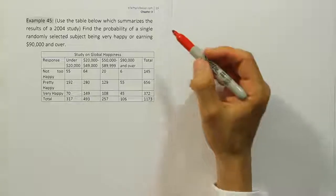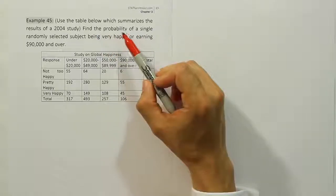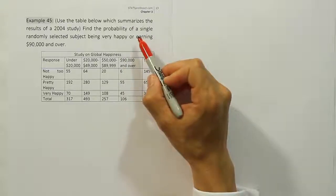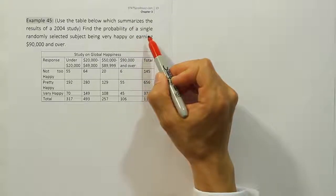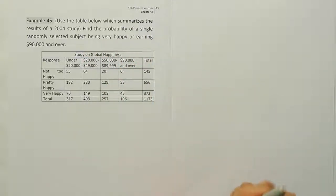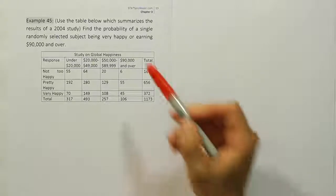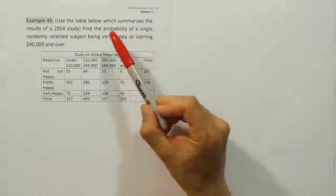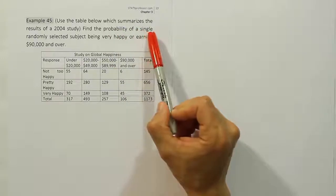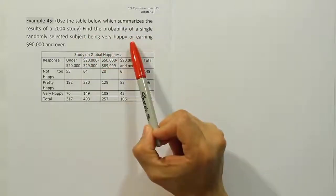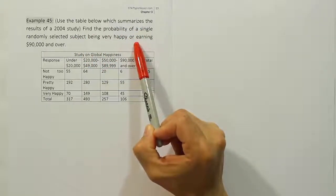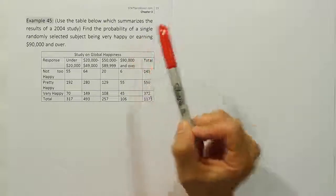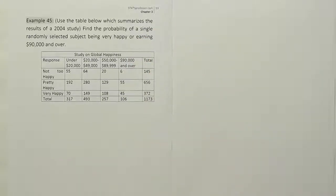When I look at this problem, the first thing I see is it's a probability problem. They're only selecting one single subject. And lastly, I see the word 'or' — the fact that it's a probability problem, they're taking just one single subject, and we have the word 'or' present, which indicates this is going to be an addition rule of probability problem.